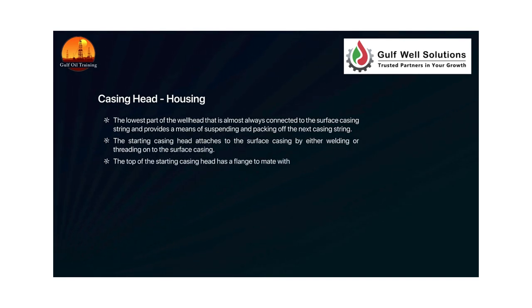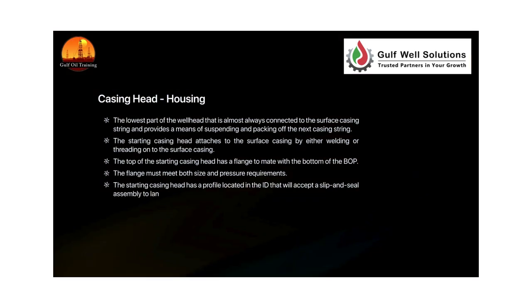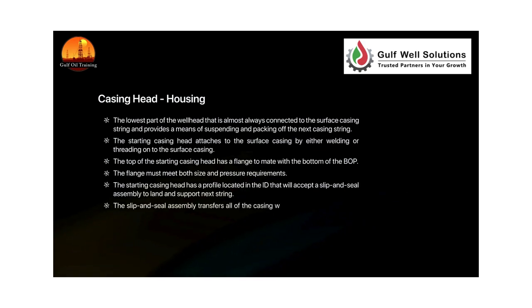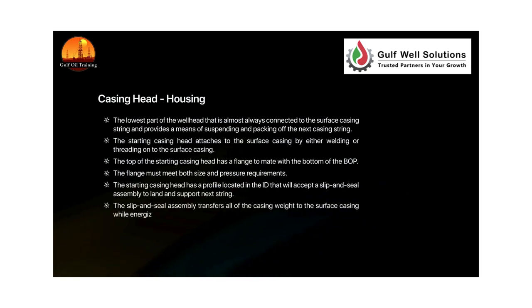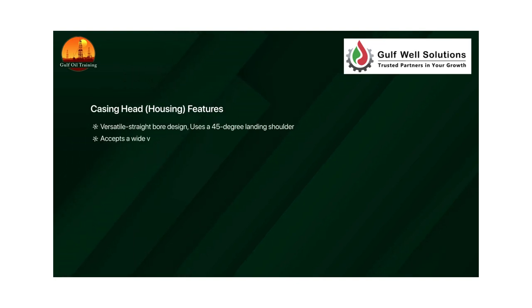The top of the starting casing head has a flange to mate with the bottom of the BOP, which must meet both size and pressure requirements. The starting casing head has a profile located in the ID that will accept a slip and seal assembly to land and support the next string. The slip and seal assembly transfers all of the casing weight to the surface casing while energizing a weight-set elastomeric seal.